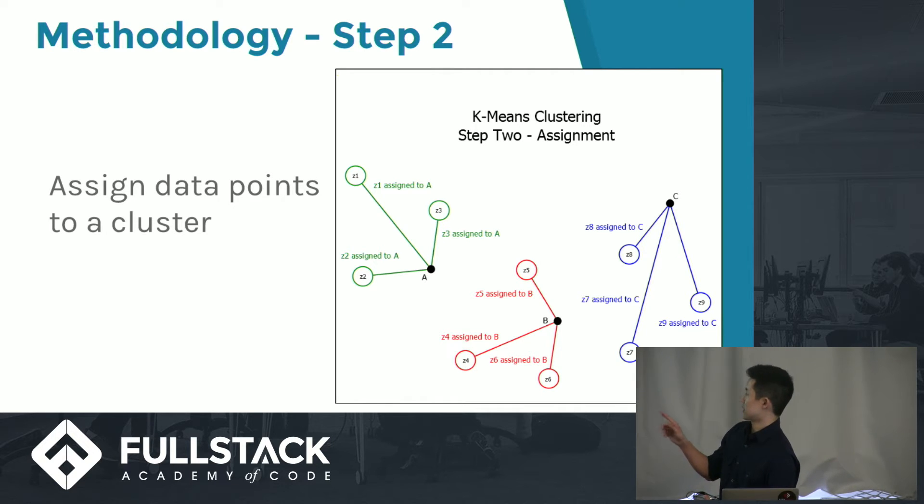You can see here that A, B, and C are the initial centroids chosen in step one. For Z1, Z2, and Z3, because they're closest in proximity to A, they will be assigned to A, and so on for B and C. Right now, we have three clusters with different points assigned to each centroid.